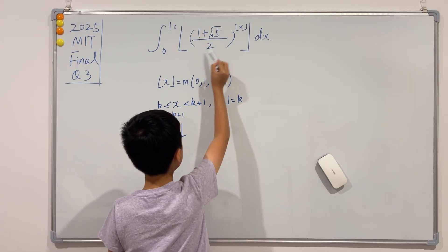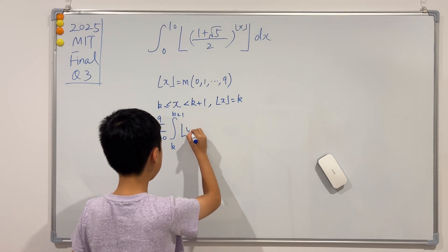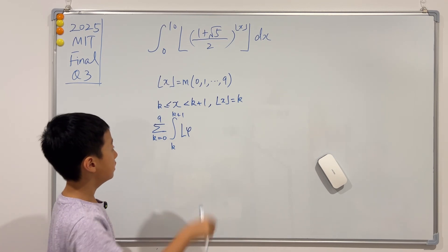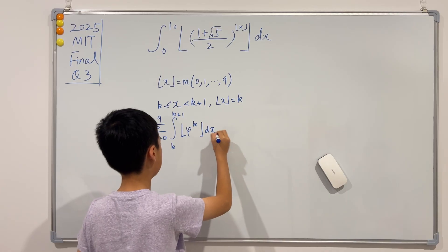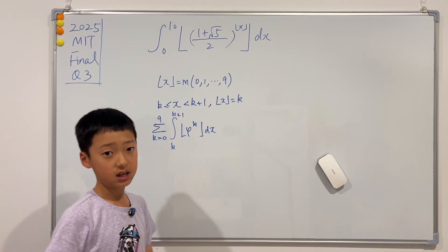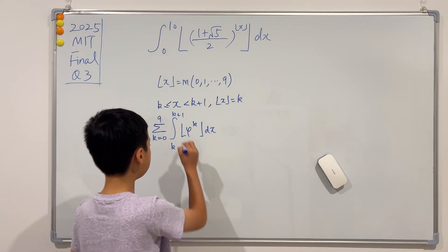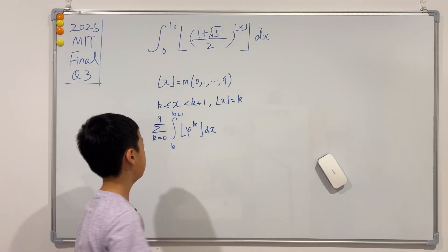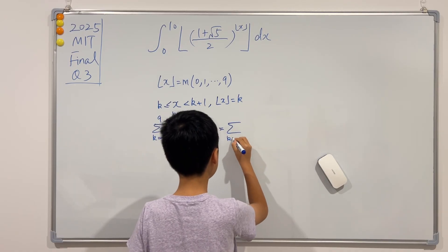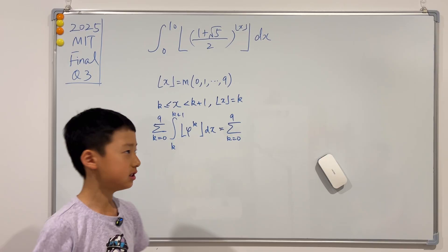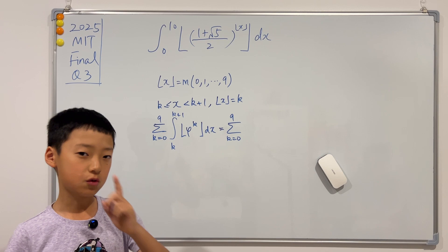If you didn't notice already, you see that this big fraction is just phi or the golden ratio, so it is just phi to the power of the floor of x, which is just k. Now when trying to find the definite integral of a constant, all we need to do is multiply the constant by the interval. So this will just be the sum when k ranges from 0 to 9, and we actually pretty much just removed the integral because the interval is just 1.